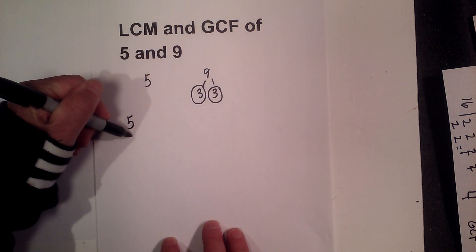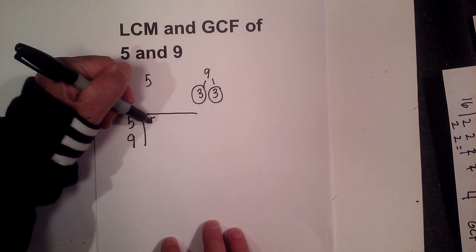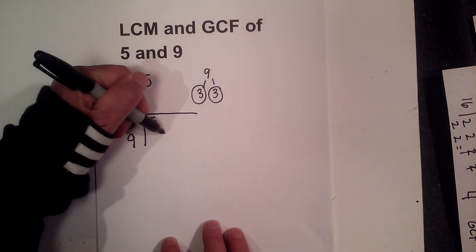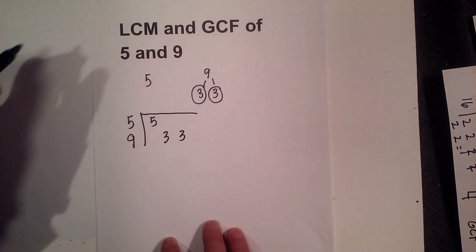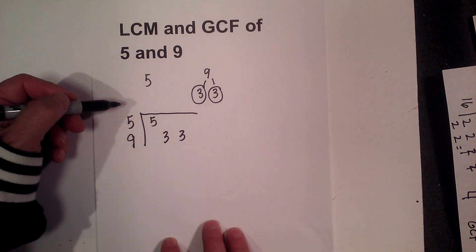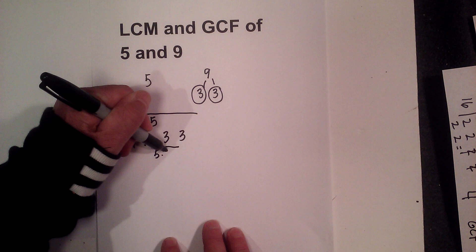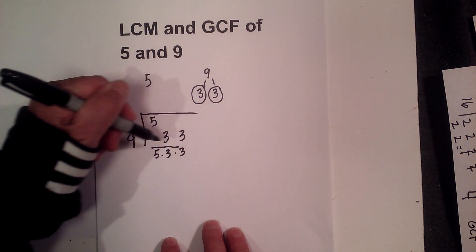Now I'm going to create my chart for 5 and 9. For 5 it's just a 5, and then for 9 it's 3 and 3. Now for the LCM, remember, I just multiply all the factors together. I don't have a vertical pair, so I'm going to use 5 times 3 times 3.